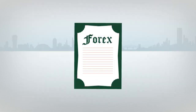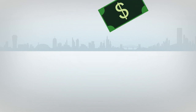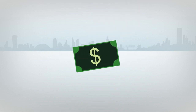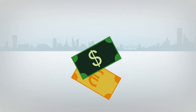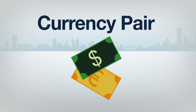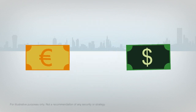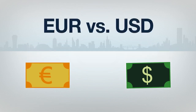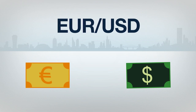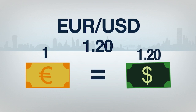Let's go over some basics of how trading Forex works. When you trade Forex, you're not just trading one product — you're trading two currencies against each other. This is known as a currency pair. The quote for a Forex currency pair defines the value of one currency relative to the other. For example, if the EUR-USD is trading at 1.20, that means 1 euro is equal to $1.20 US dollars.